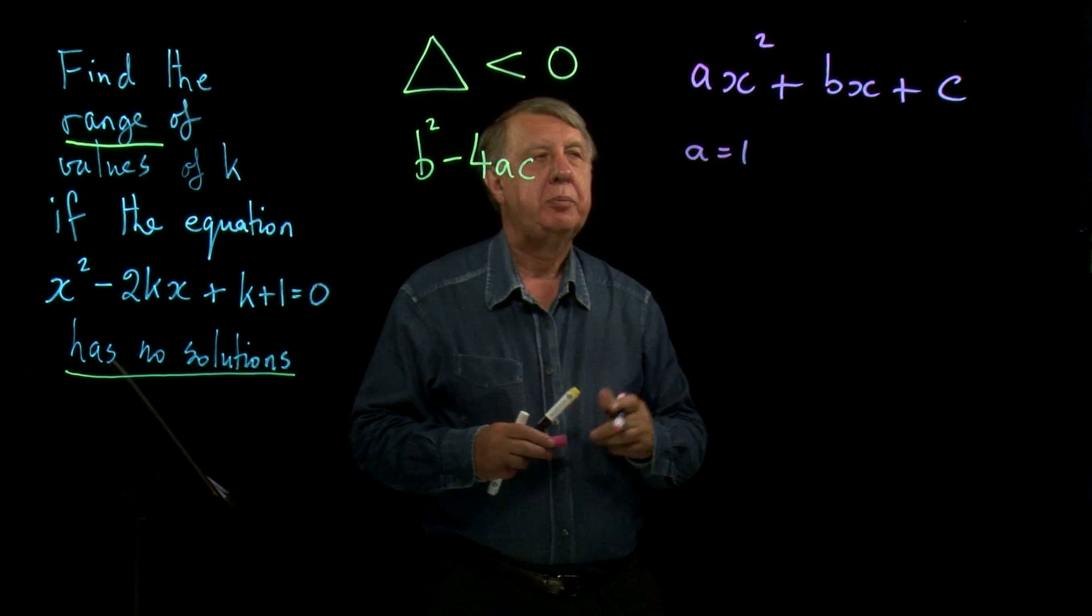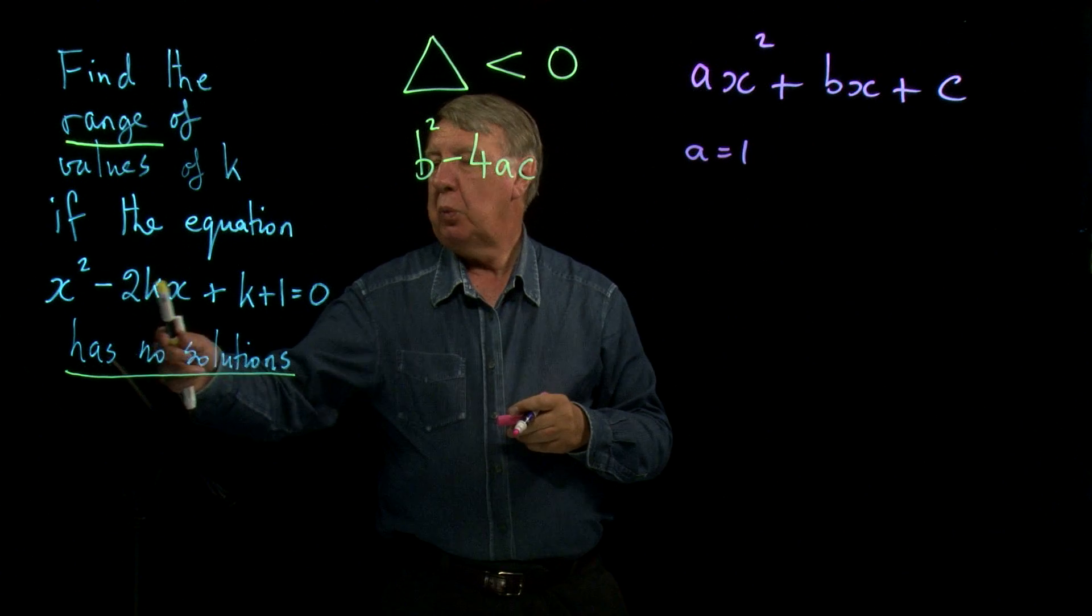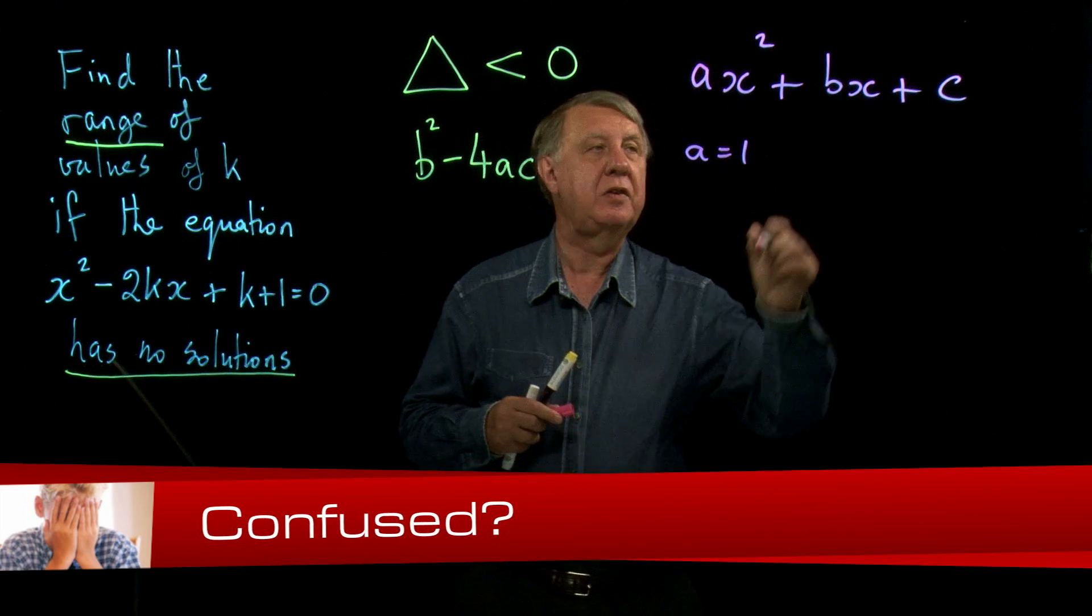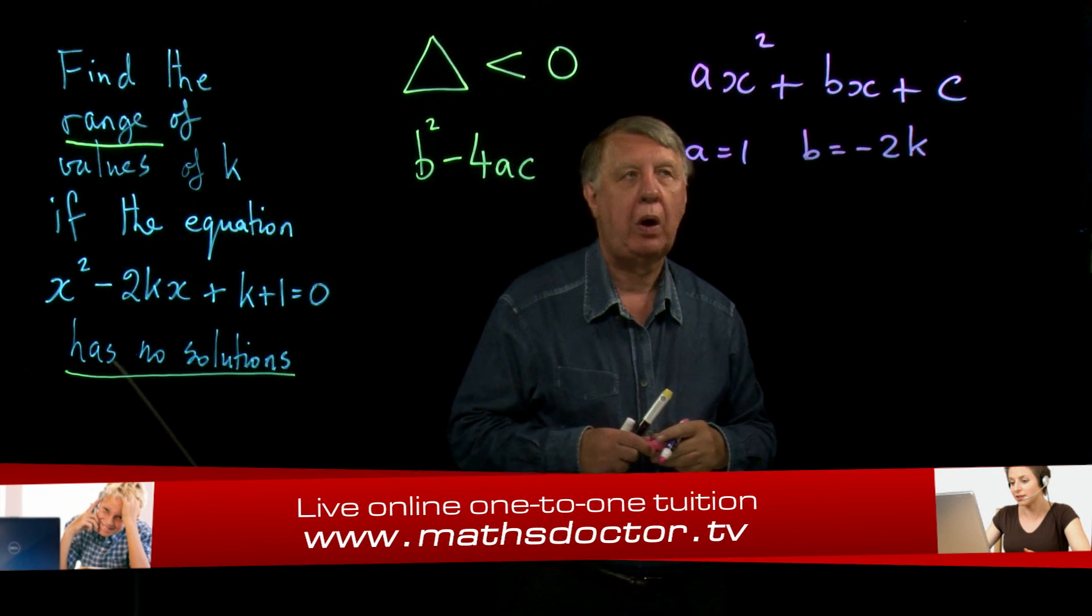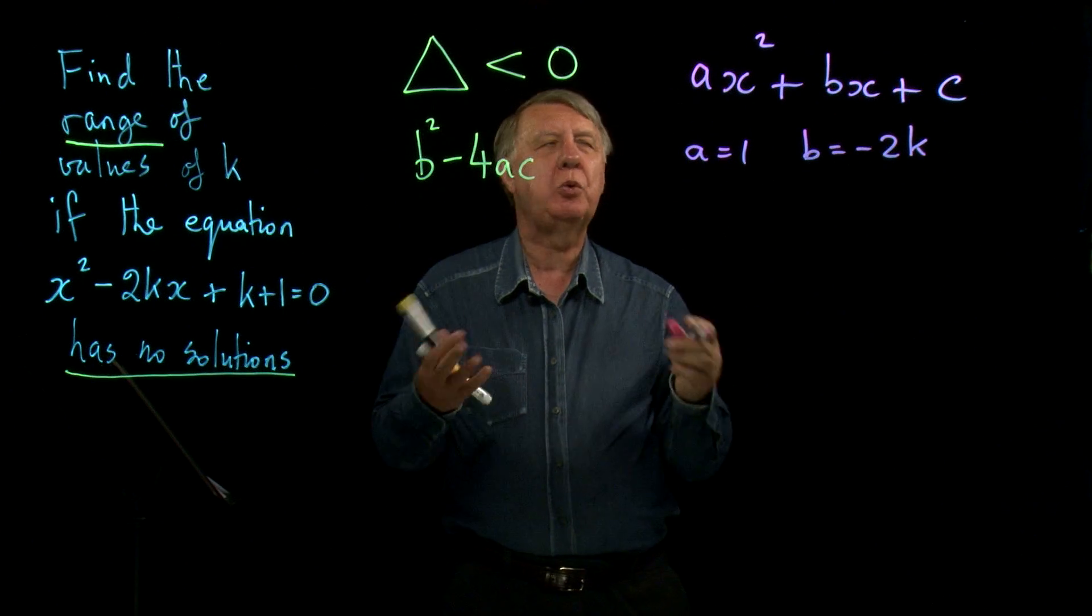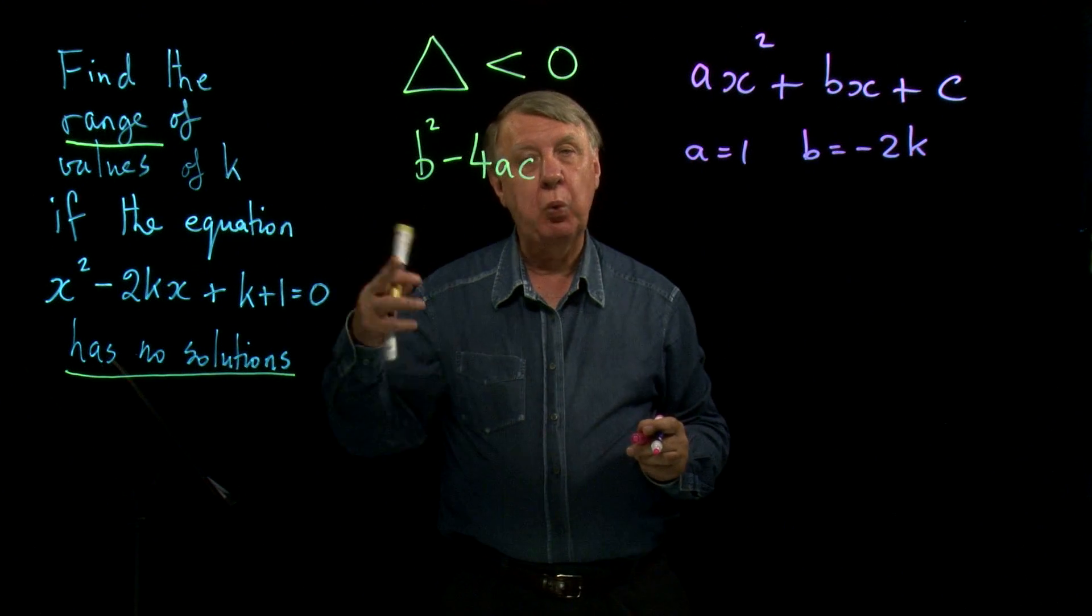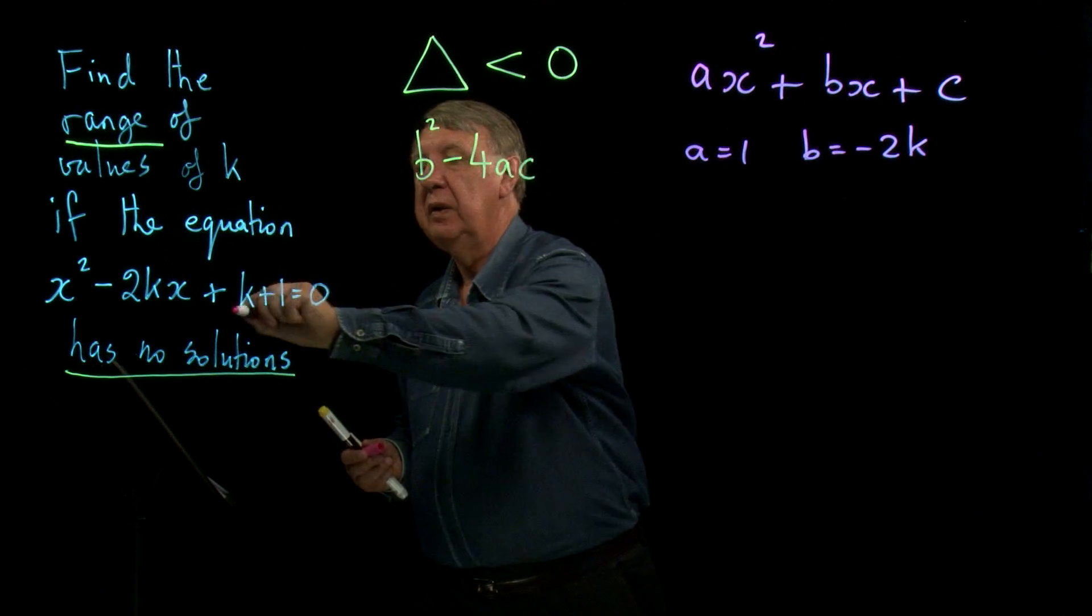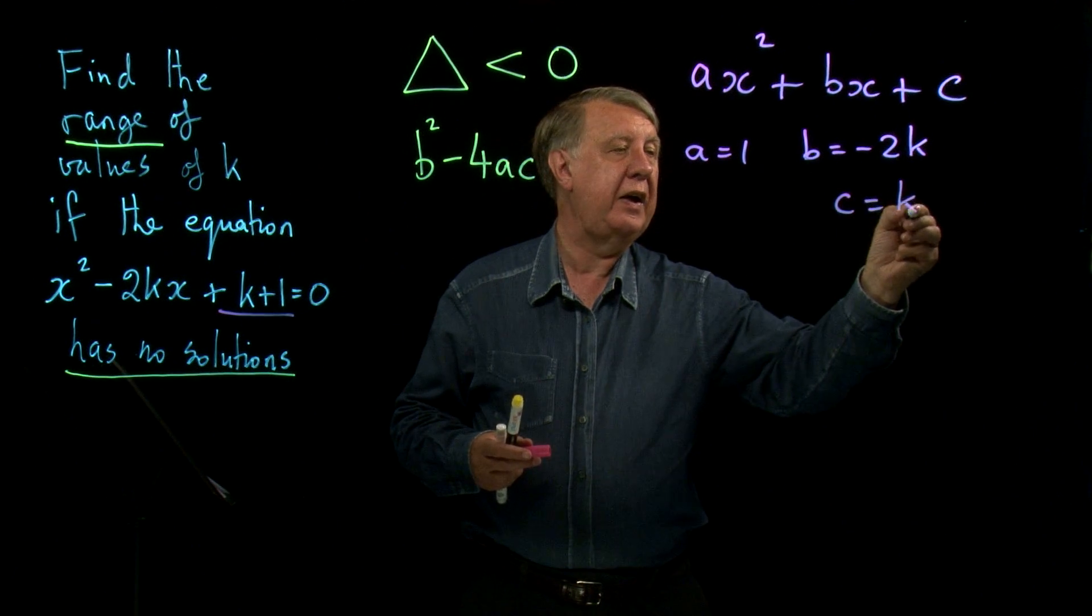What about b? B is the coefficient of x, the number in front of x. Well if we look at it negative 2k is the thing that's in front of x so b is negative 2k. What about c? Well c is the number on the end. But you could also say it's everything else. So because the number on the end is 1, but we've dealt with the x terms, so this is now everything else. So c is k plus 1.